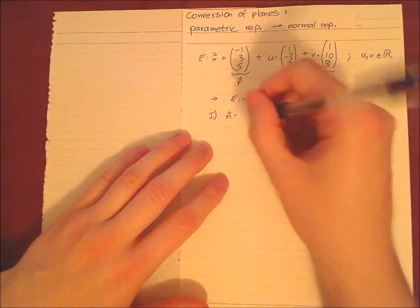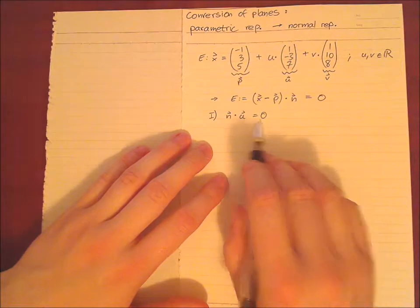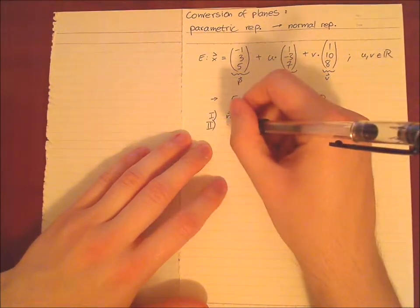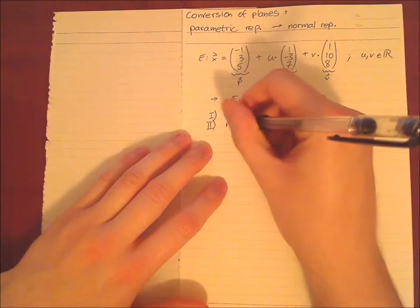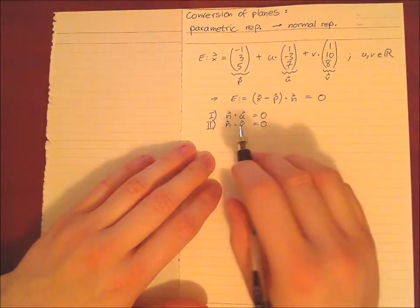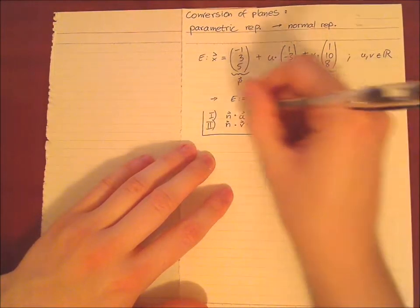And those 90 degrees we can define as follows. So we say n times our vector u has to be zero. This is the definition actually of 90 degrees directly. Second, we have to say n also with v has to be 90 degrees. So in this case we say zero because we have the vector product. So this is our assumption.